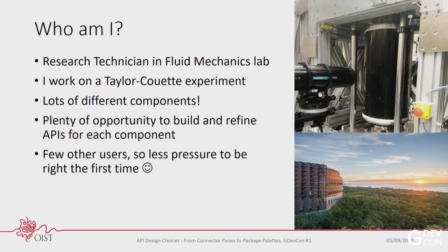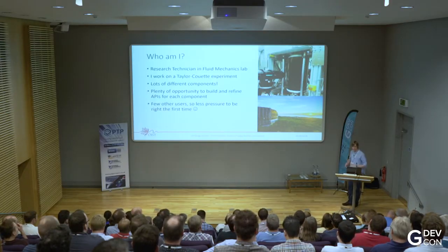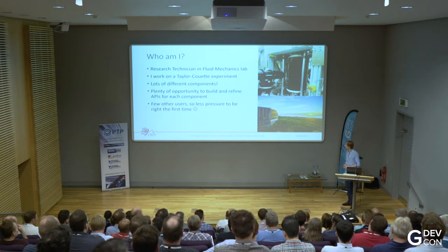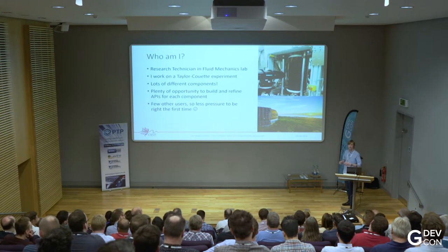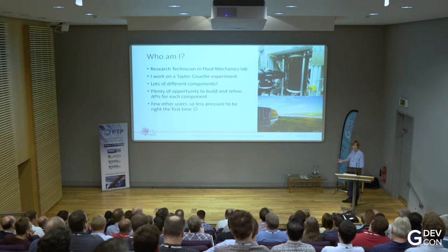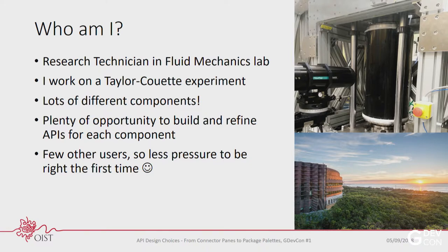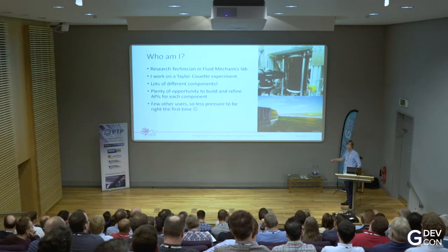I have lots of opportunity to build and refine new APIs because I have quite a few components. Because the users of my components are me and one colleague, when I really screw it up I can change that. I know many of you don't have that freedom — for people who have released APIs with lots of users, you have to be careful about backward compatibility. You want to consider what you can do to make your API flexible to future changes without limiting yourself.